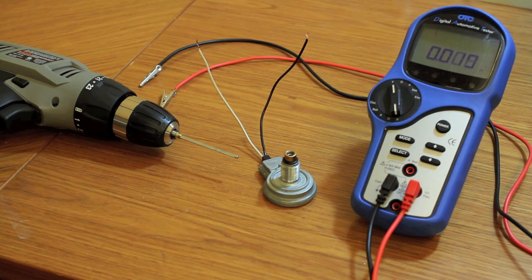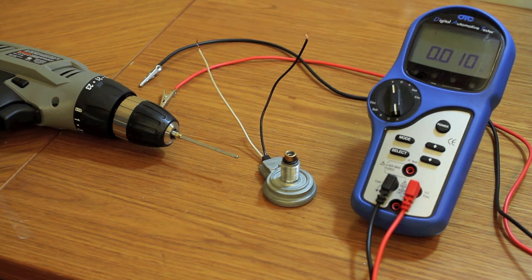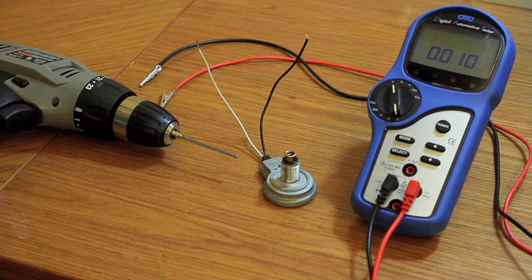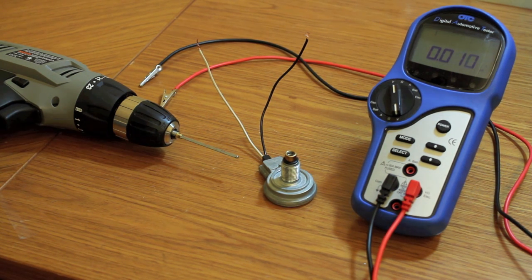Today we're going to be testing the output of a two-wire VRS or variable reluctance style speed sensor. These are commonly found in OEM applications, aftermarket transmissions, and aftermarket gauges. This particular one is from an AutoMeter street rod gauge kit.